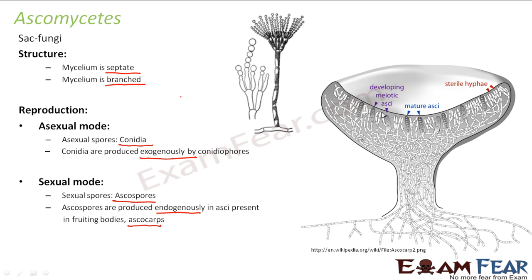In this picture, you can see the asci — sac-like structures. In mature asci, ascospore formation is visible. Sterile hyphae show no spore formation. Developing meiotic asci contain a small number of ascospores, while matured ones show more spores. Each sac-like structure is an ascus, the spores produced are ascospores, and the entire structure is the ascocarp — the fruiting body of ascomycetes.